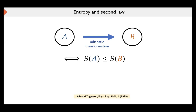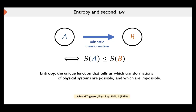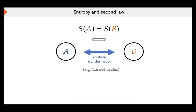In this sense, entropy is the unique function that tells us which transformations of states of a physical system are possible under adiabatic transformations. This is remarkable because it tells us that if we want to study the convertibility of states, the only thing we have to know is the entropy — this one function encodes everything about the possibility of conversion. A fundamental feature of this setting is reversibility: two states of equal entropy are connected by a reversible process, so we can go from A to B and from B to A.